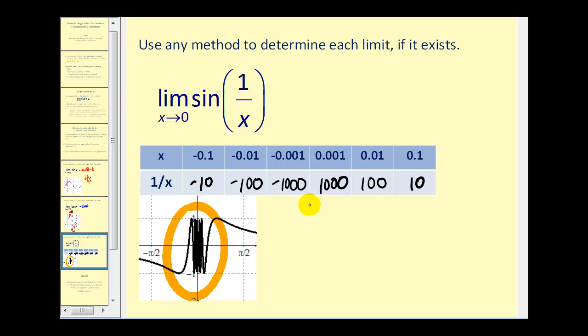Going back to our table, as x approaches zero, 1/x is actually approaching positive and negative infinity, which means that every 6.2 radians, the function value will alternate between negative one and positive one. As we get closer and closer to zero, the function sin(1/x) is alternating between negative one and positive one faster and faster. Therefore, because this function alternates between negative one and positive one as x approaches zero, this limit does not exist.